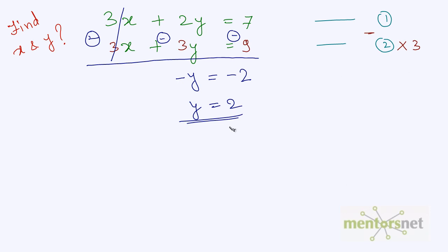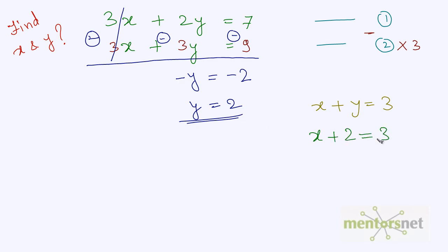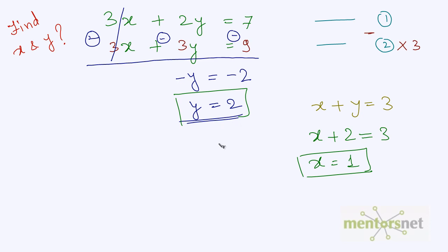Now you can put the value of y into any one of these equations to get the value of x. The original equation 2 was x plus y is equal to 3. Substituting y equals 2: x plus 2 equals 3, so x is equal to 1. So the value of x is 1 and the value of y is 2.